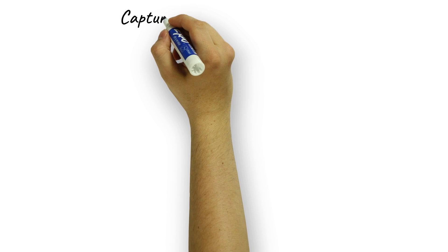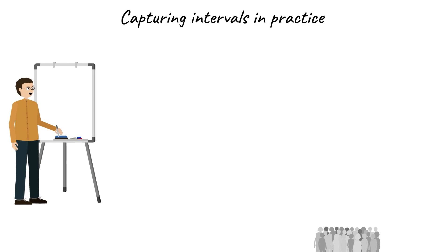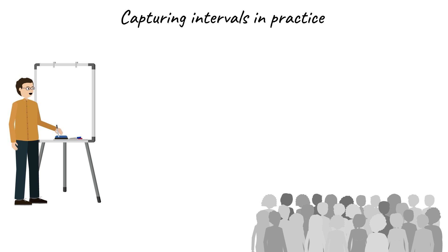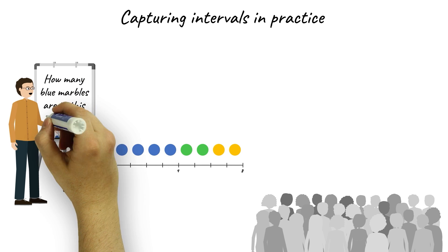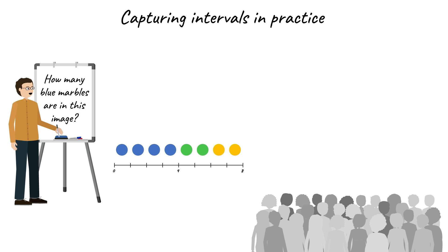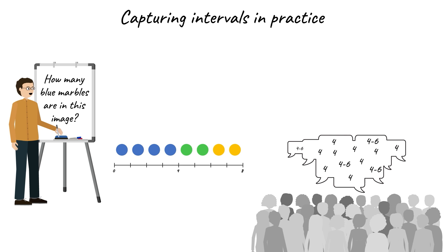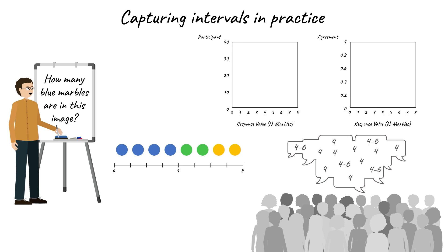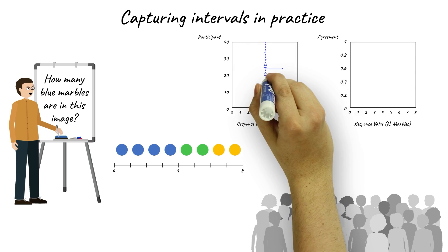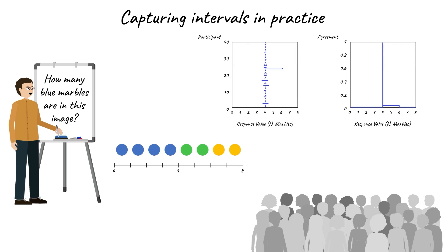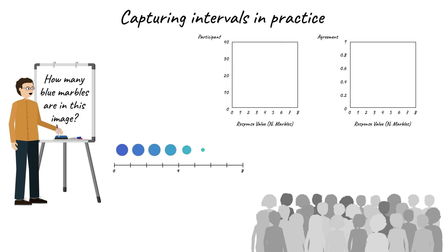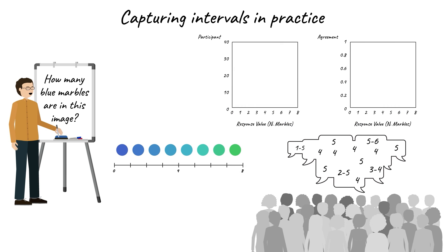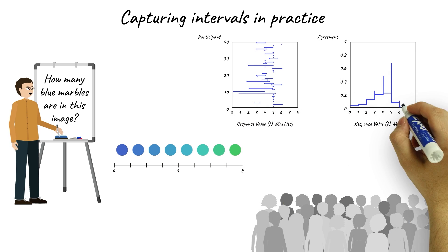To demonstrate the interval agreement approach, 40 participants were presented with images of 8 marbles and asked to estimate how many blue marbles are in each image. Participant response intervals are plotted in distribution graphs. They drew narrow ellipses, reflecting certainty that there are 4 blue marbles. Participants are then shown a different set of marbles and provide their response, and their response intervals widen as uncertainty increases.